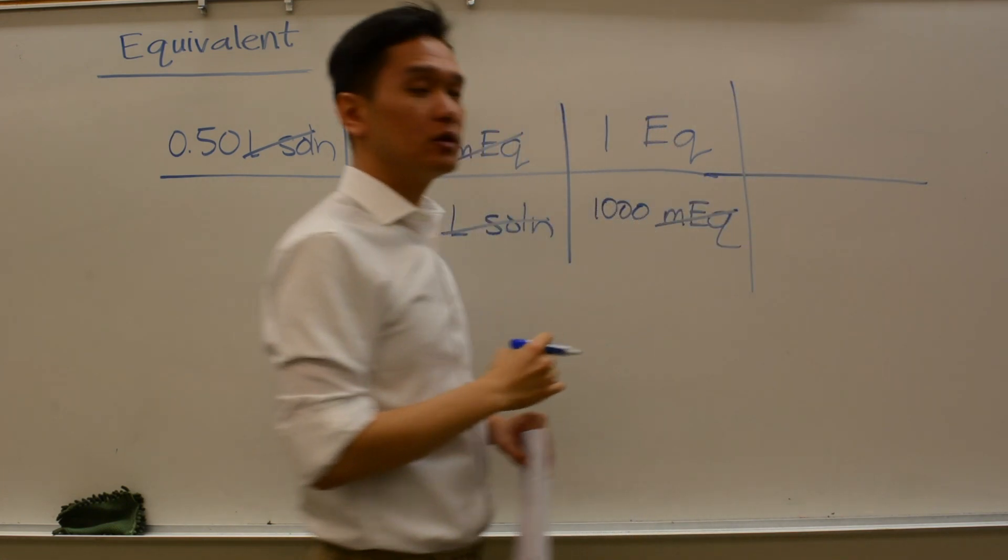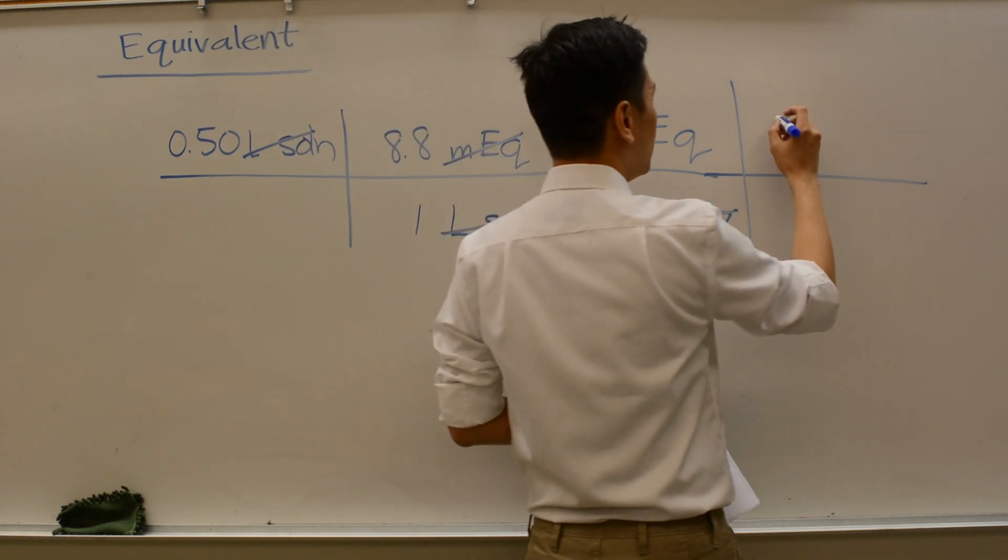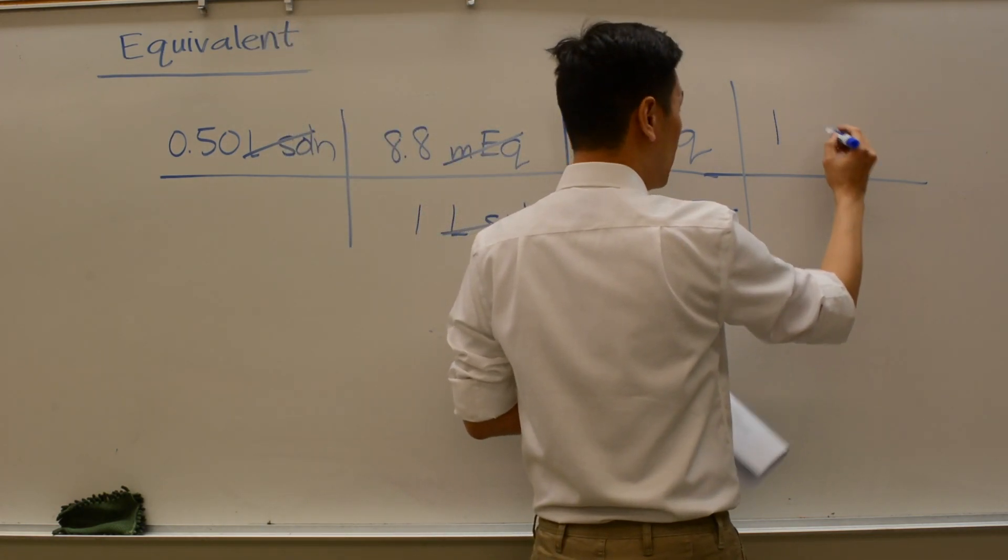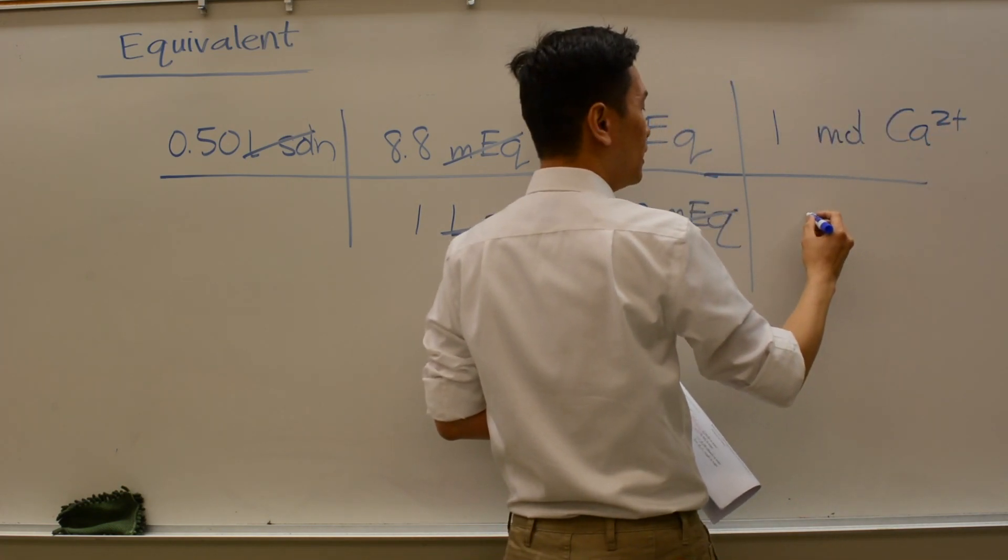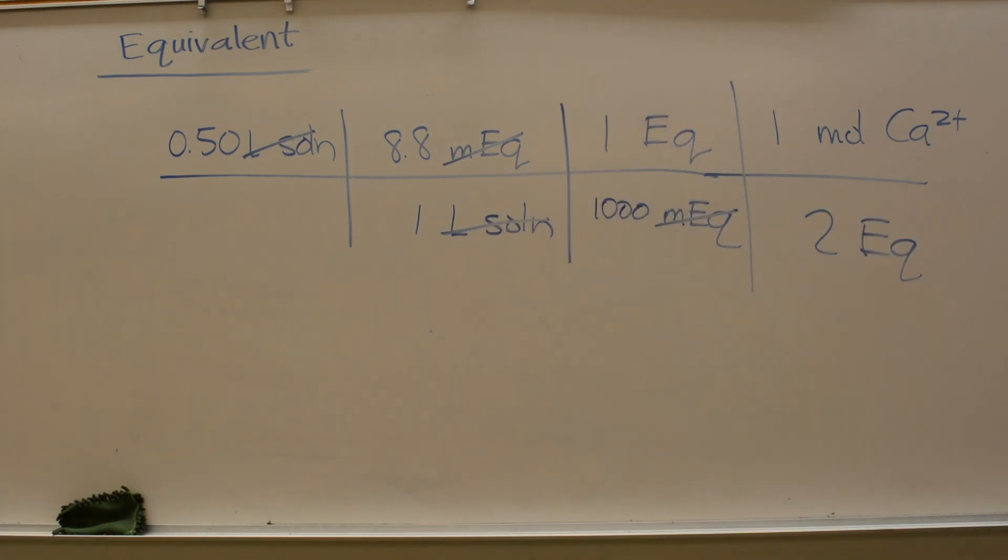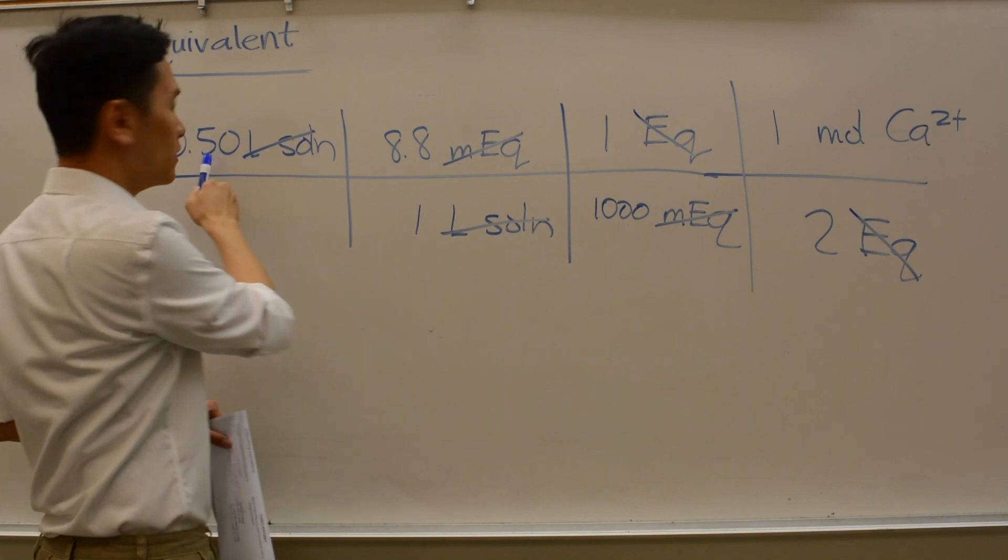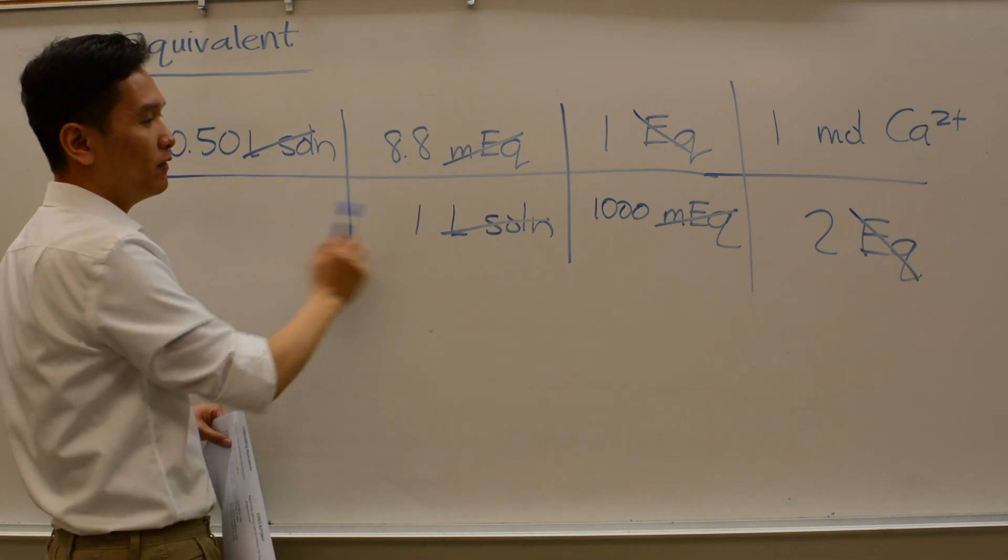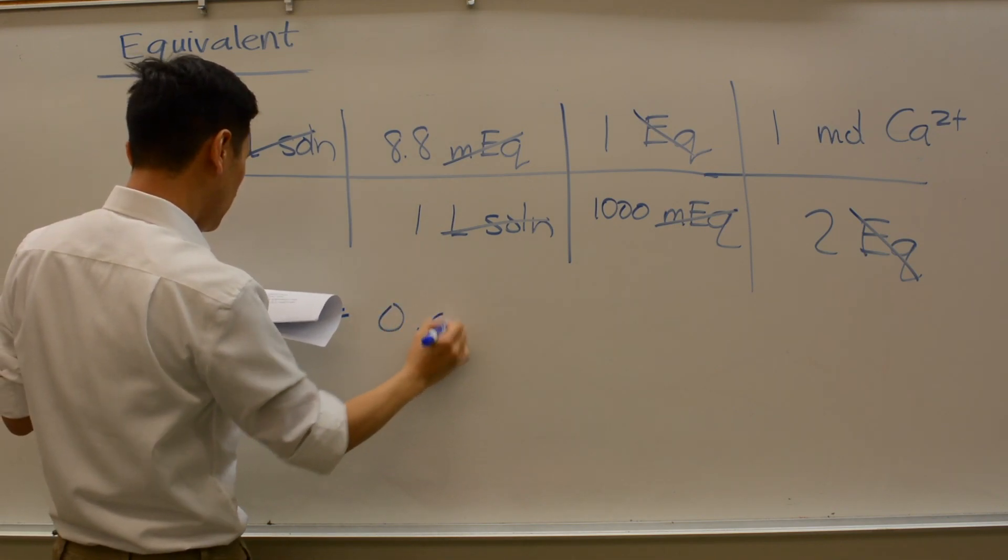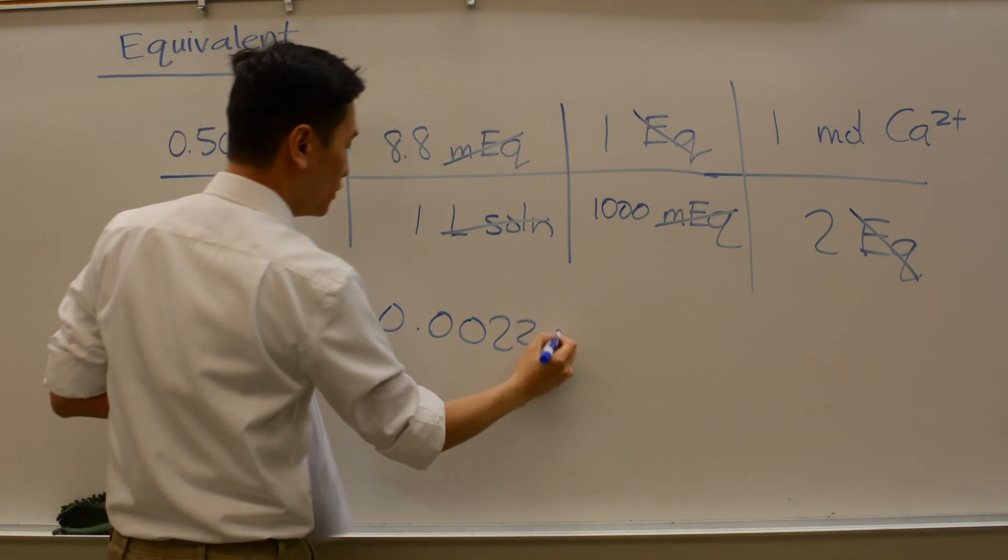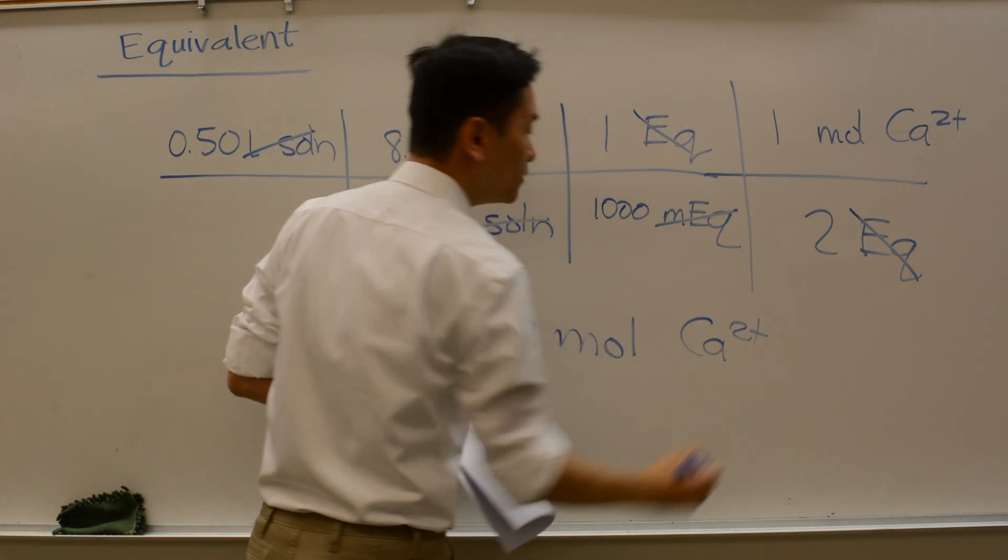Lastly, what's the relationship between equivalents and moles of calcium? We said that in 1 mole of calcium 2+, there are 2 equivalents. So equivalents cancel out. You take 0.5 times 8.8 divided by 1,000 divided by 2. You should get 0.0022 moles of calcium 2+.